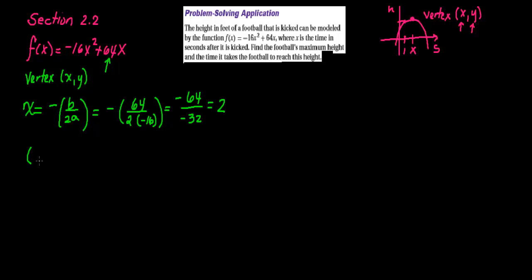So far, I know that the maximum value or the maximum height this ball will reach happens at 2 seconds after being kicked, because that's what I got for x. Now I want to find what the y-value is. The y-value will tell me the maximum height because the y-axis represents height. So how do I find the y-value?